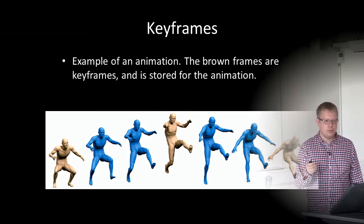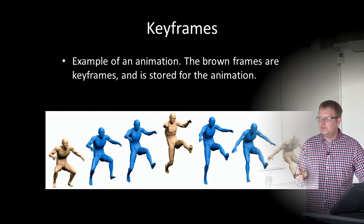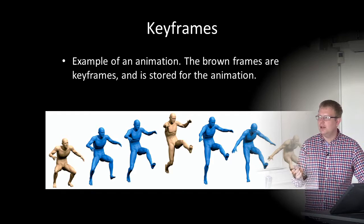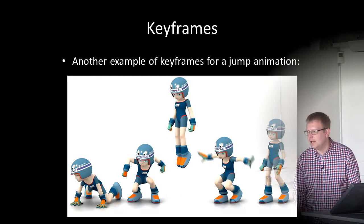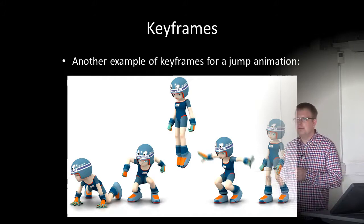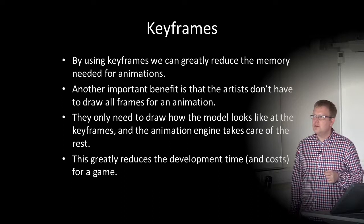The brown frames are keyframes stored for the animation; the blue frames are the interpolation between two keyframes. We calculate how the skeleton and joints will be positioned between two keyframes. An example of keyframes for a jump animation: start standing, go down, jump, land, and go to a crouch position. We can interpolate between these five states to produce a smooth jumping animation. By using keyframes, we can greatly reduce the memory needed for animations.